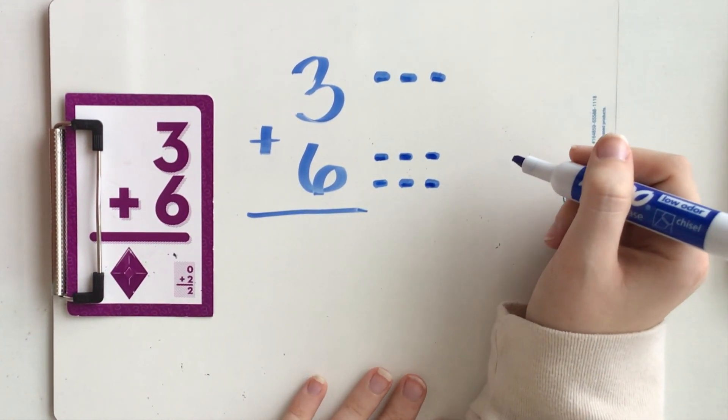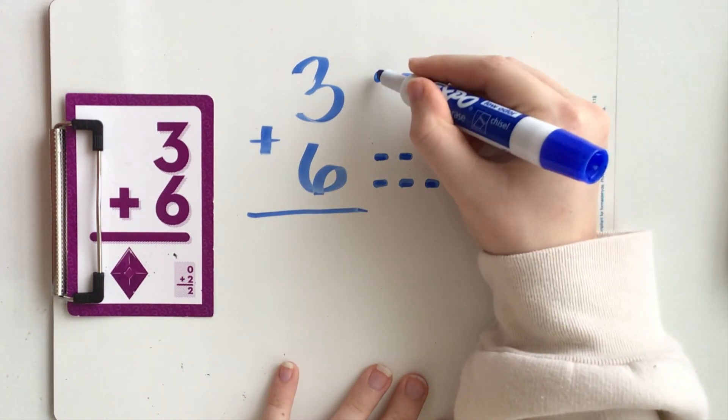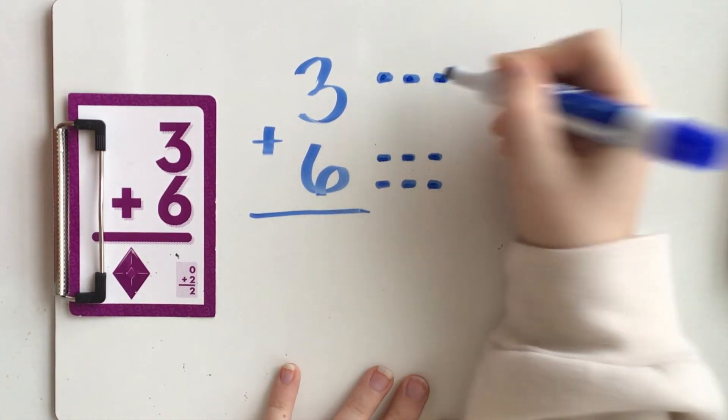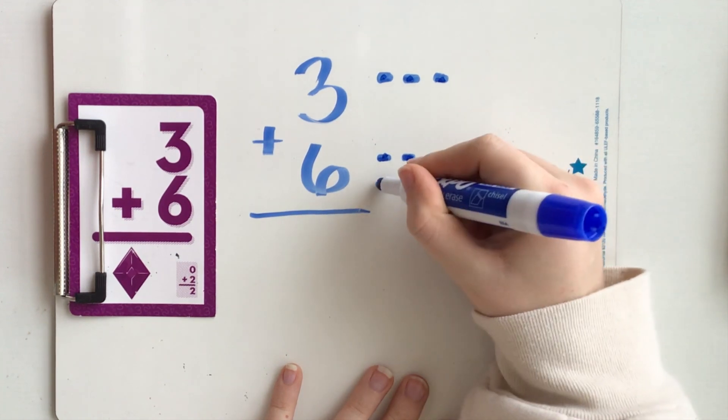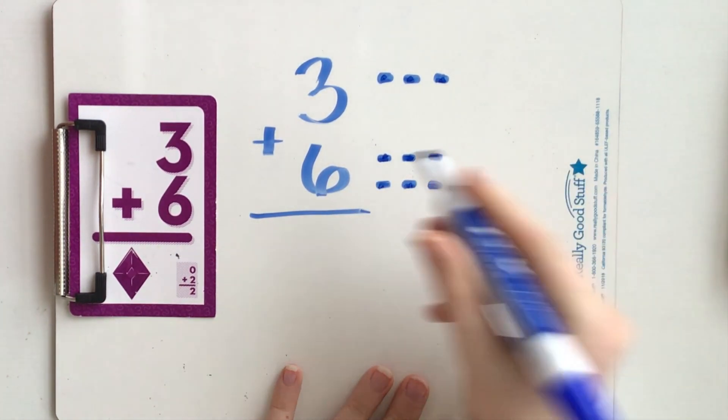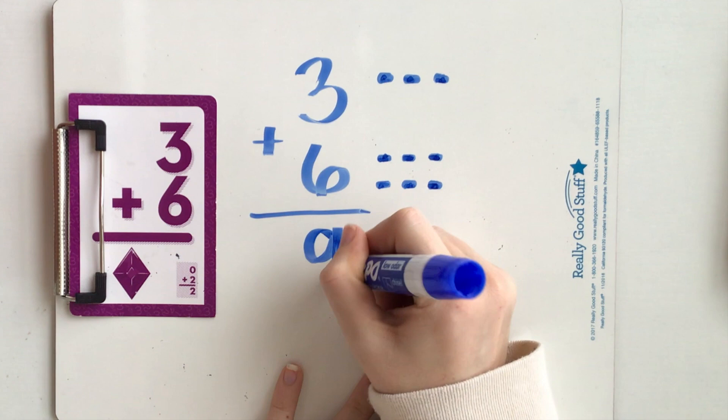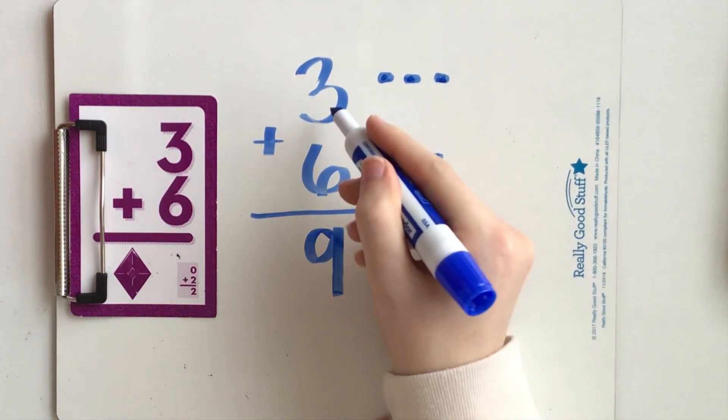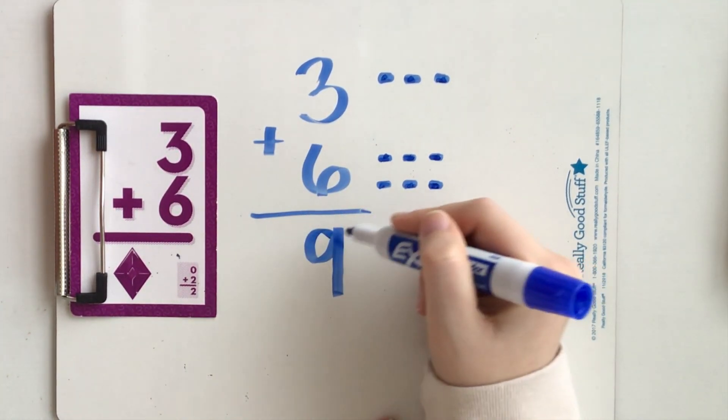Now I'm going to count all of my dots together. One, two, three, four, five, six, seven, eight, nine. Nine. Three plus six equals nine.